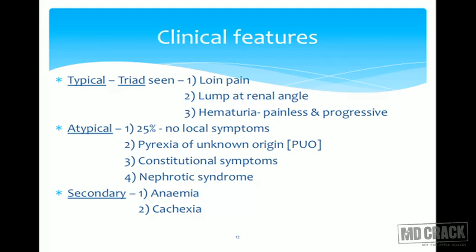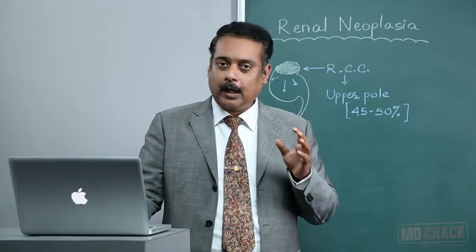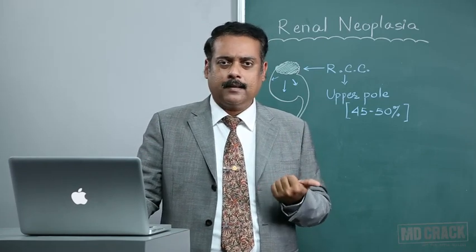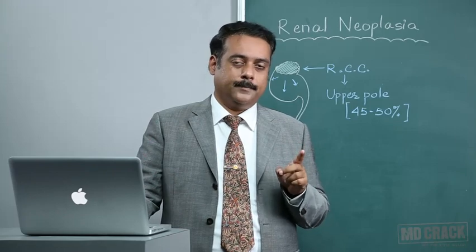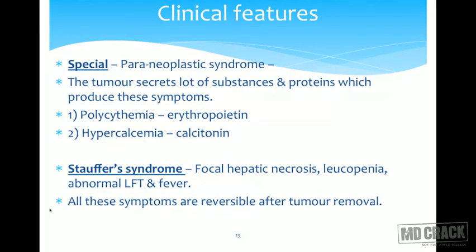Many patients can actually present with pyrexia of unknown origin or fever of unexplained origin. If a patient has fever for a period of one month and the cause cannot be determined — whether bacterial or viral — one should always look for RCC. Patients will also have constitutional symptoms like body ache, malaise, and a sensation of not feeling well. Few patients will have nephrotic syndrome such as proteinuria, edema, and puffiness of face. Secondary features such as anemia due to prolonged blood loss and malignant cachexia can also be evident.